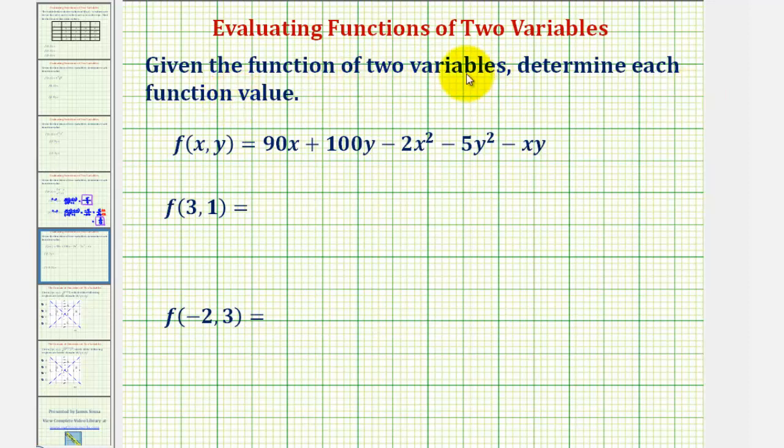Given the function of two variables, we're going to determine each function value. So for f of three comma one, we'll substitute three for x and one for y.